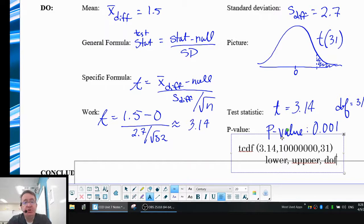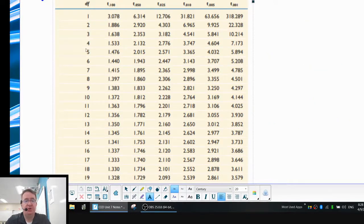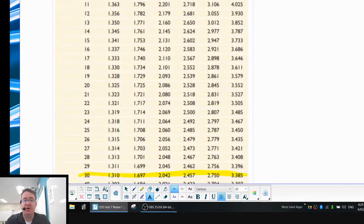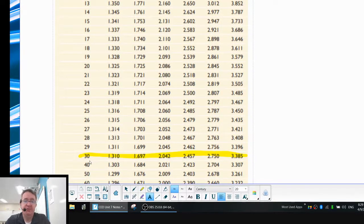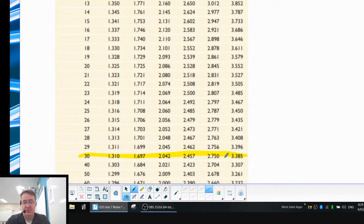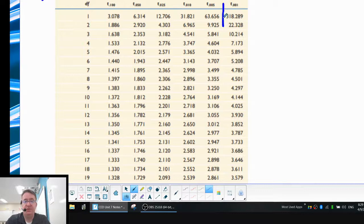Now, if you wanted to do table B, that would look like this. You are going to go down to the degrees of freedom that you have. If your degrees of freedom isn't listed, you go to the previous one because we're always going to play the more conservative card. Since we have 31 degrees of freedom, we would actually go to 30 on the chart. Then you're going to look to see between what two values is your T value. Our T value is 3.14. So we know that that falls right here.